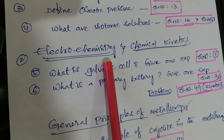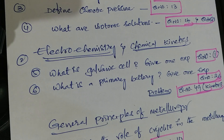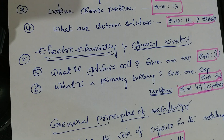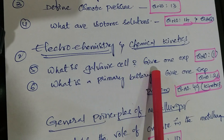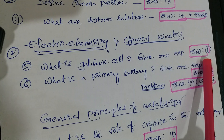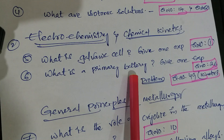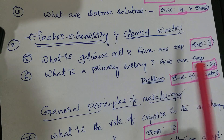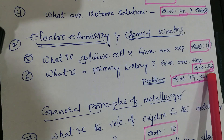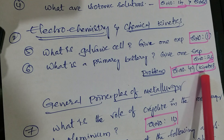Next lesson is Electrochemistry and Chemical Kinetics. Mostly in this lesson, 8-mark questions will come, but sometimes they ask VSAQs also. So the main question is: what is the galvanic cell? Give one example - that is question number 1. What is a primary battery - question number 26, and problem question number 49 from Chemical Kinetics.